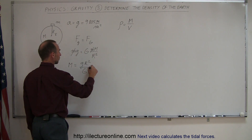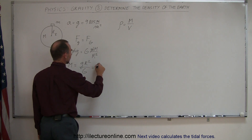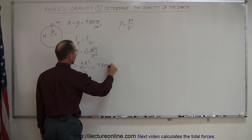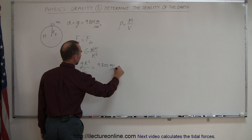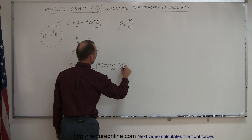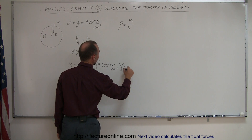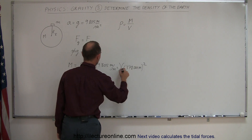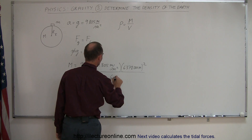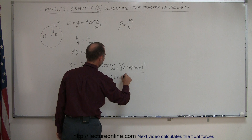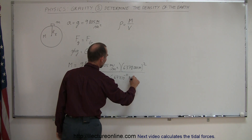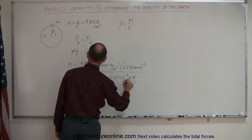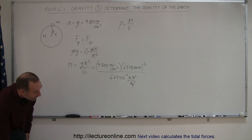Let's calculate what that is. That's equal to 9.805 meters per second squared, multiplied by the radius, which is 6,378,000 meters, and we have to square that, and we divide the whole thing by G, which is 6.67 times 10 to the minus 11 Newton meters squared per kilogram squared. And that will give us the mass in kilograms.